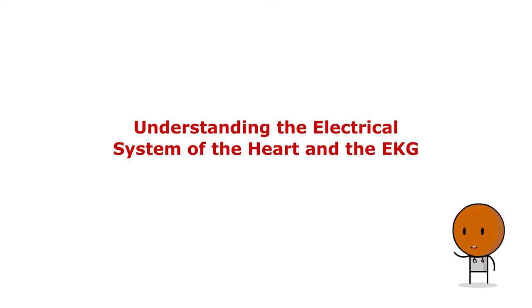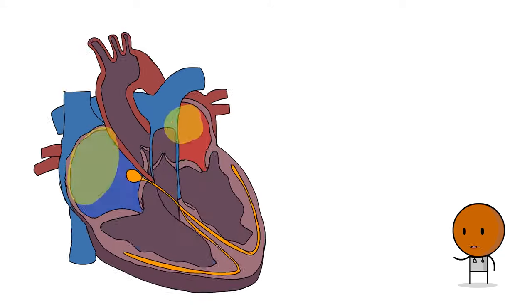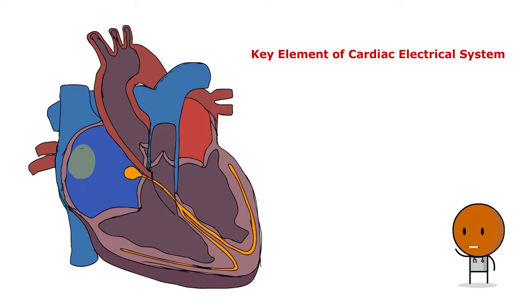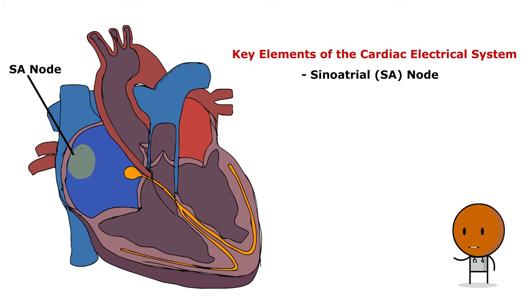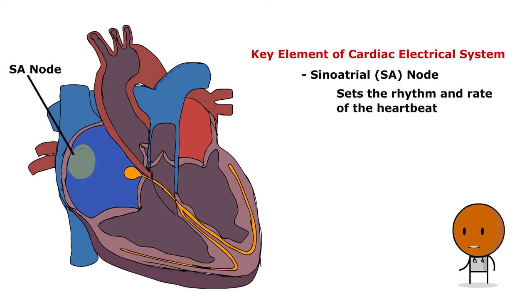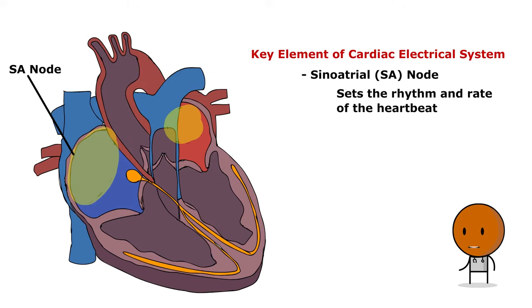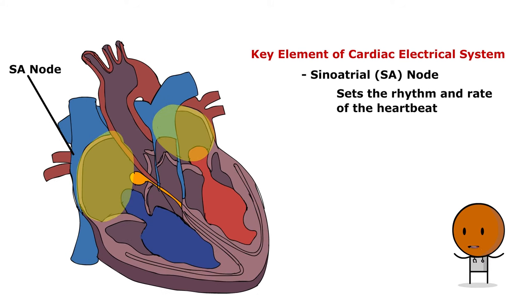Well, we'll start with the electrical system of the heart and the EKG. The heart's intrinsic electrical system comprises several key structures. The primary pacemaker, the SA node, situated at the right atrium's upper end, sets the rhythm and rate of the heartbeat. The electrical impulses generated by the SA node traverse the atria, prompting them to contract.